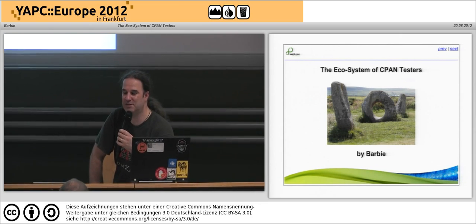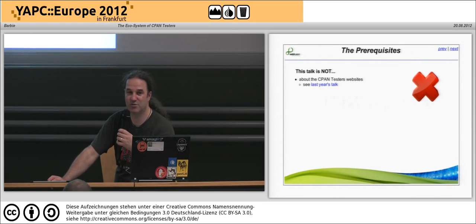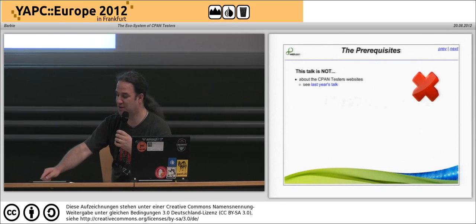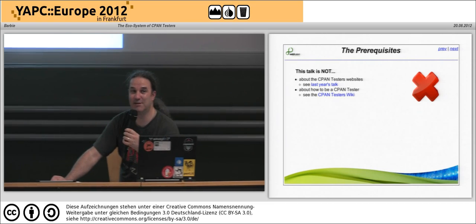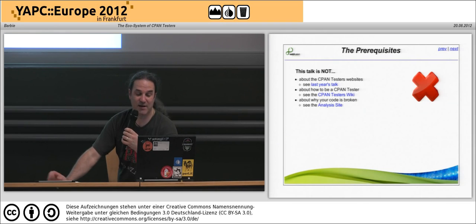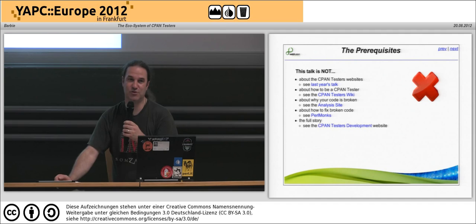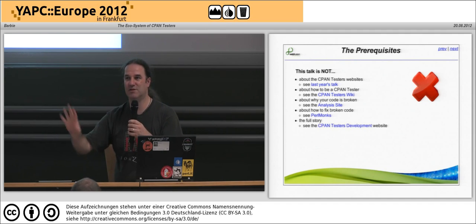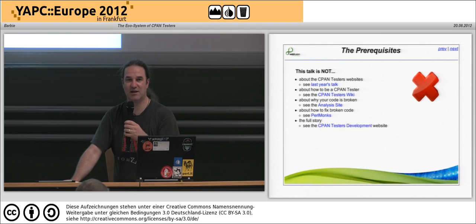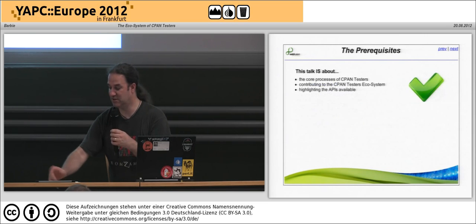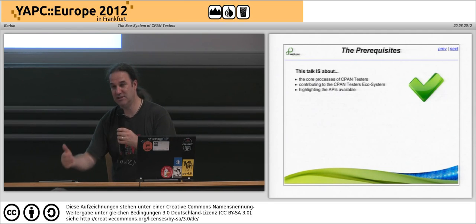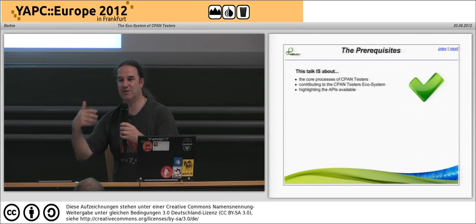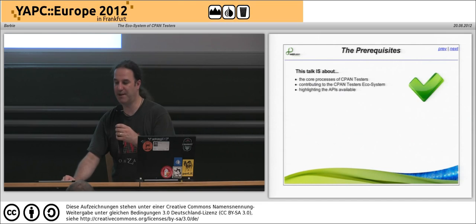Before I go into any depth I just want to emphasize that this talk is not about the CPAN Testers websites — I did that one last year. It's not about how to be a CPAN Tester — there's plenty of documentation on the wiki and other slides for that. It's not about how to fix your broken code or why your code is broken. It's also not the full story. This talk is mainly about the core processes used in CPAN Testers, and it's more about contributing code — looking at areas and code repositories to get involved in.